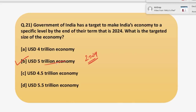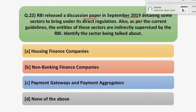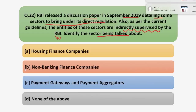Moving on to the next question: RBI released a discussion paper in September 2019 detailing some sectors to bring under its direct regulation. As per the current guidelines, the entities of these sectors are indirectly supervised by the RBI. Identify the sector being talked about. Recently, a discussion paper was released by RBI making changes regarding a specific sector. Earlier this sector was under the indirect supervision of RBI, and now RBI has proposed to take it under direct regulation. Out of the four options given, you have to tell which sector is being referred to.